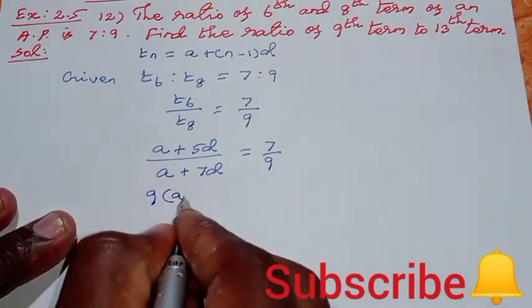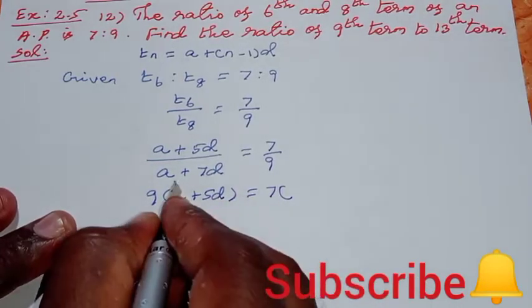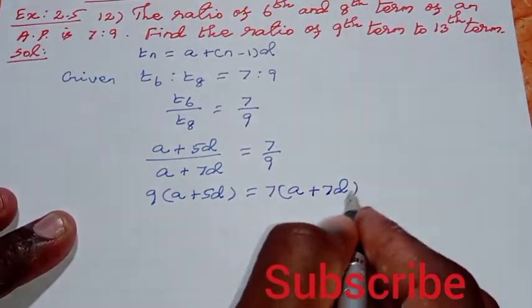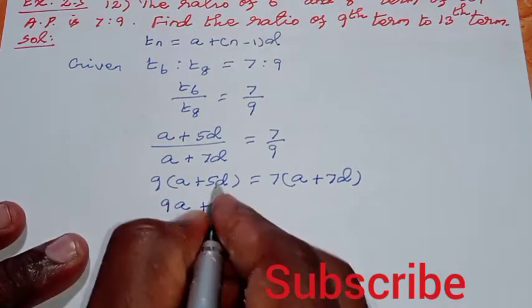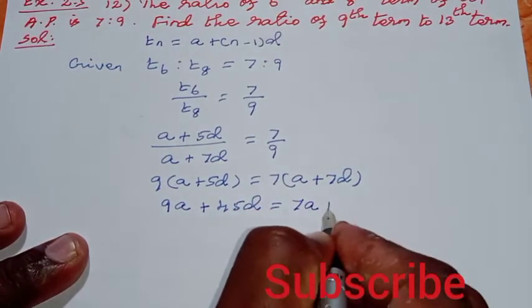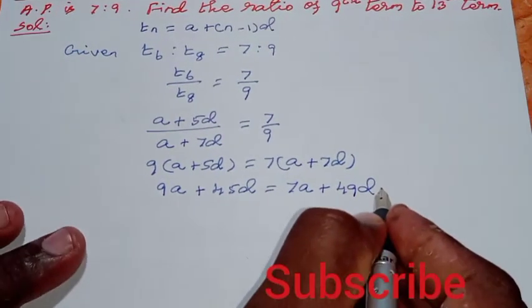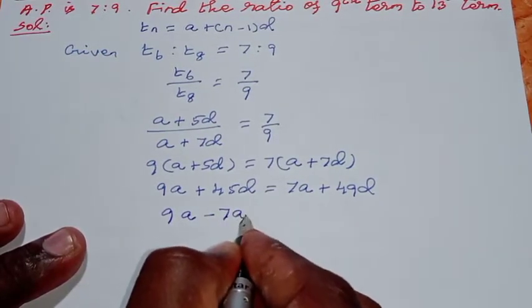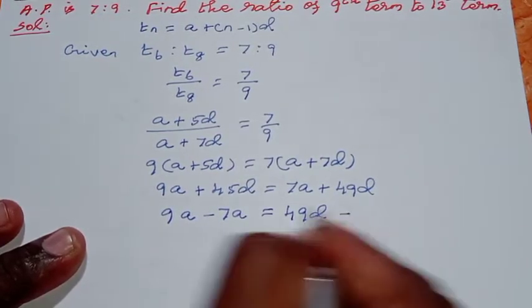Now, 9 into a plus 5d equal to 7 into a plus 7d. Expanding: 9a plus 45d equal to 7a plus 49d. So 9a minus 7a equal to 49d minus 45d.